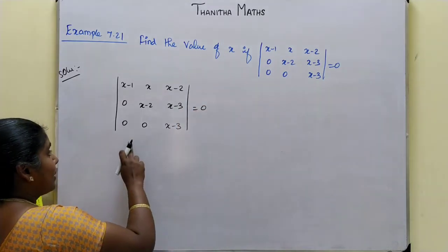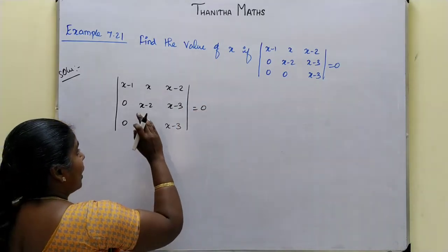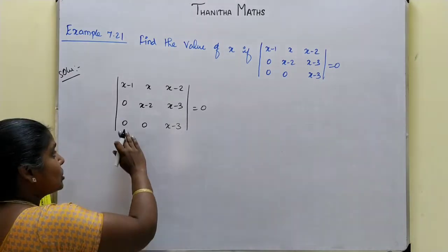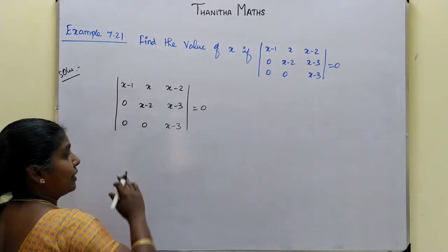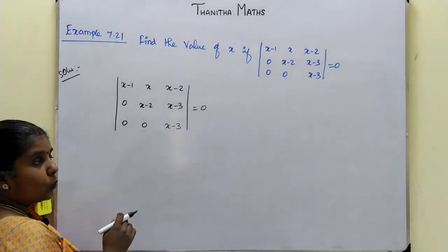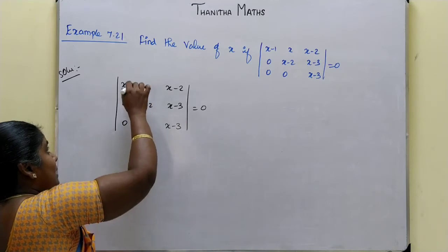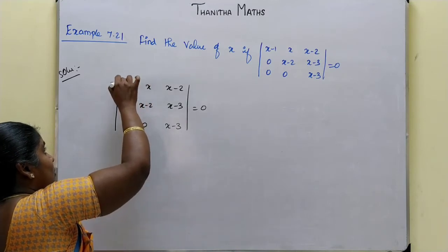You can find the determinant of x-1, x, x-2; 0, x-2, x-3; 0, 0, x-3, equal to 0. This is a triangular matrix, so the determinant is the product of the diagonal elements: (x-1)(x-2)(x-3) equal to 0.